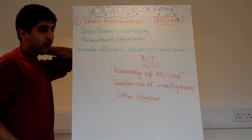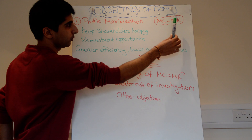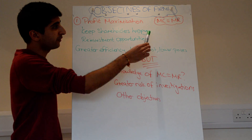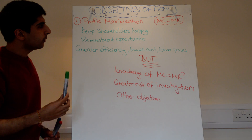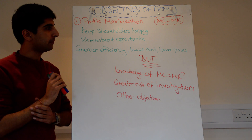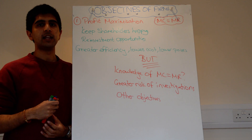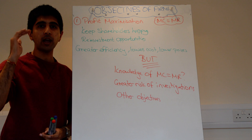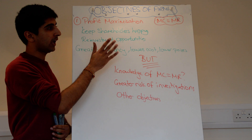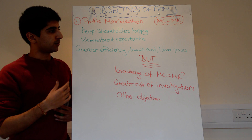We tend to assume as economists that all firms will want to profit maximise, and profit maximisation occurs when marginal cost equals marginal revenue. One reason is it will keep shareholders happy. Making maximum profits means their returns on dividends will be very high. Google recently reported massive profits, way higher than expected, which increased the share price hugely. Shareholders are very happy, and other people are buying lots of shares.